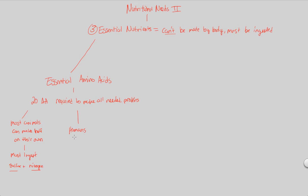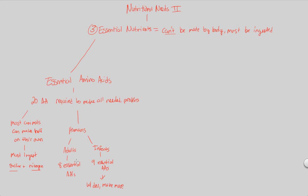Humans actually change their ability in terms of what amino acids they can and cannot make. In adults, we need to consume eight essential amino acids, but in infants, they actually need to consume nine — they don't have the capability of making one of the amino acids that adults later gain the ability to make. So with development, as infants develop, they can make one more amino acid.